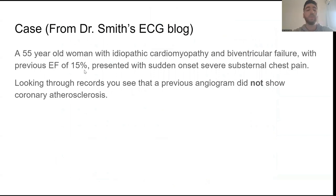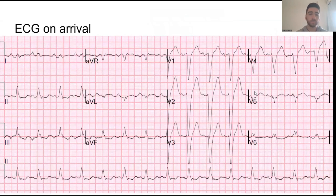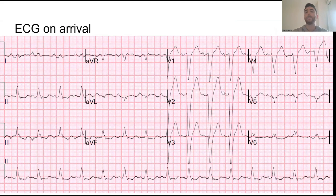Let's go through a case. We have a 55-year-old woman with idiopathic cardiomyopathy and biventricular failure with a previous ejection fraction of 15%. She presents with sudden onset severe substernal chest pain. Previous records show a coronary angiogram done within the past few months did not show significant coronary atherosclerosis. This is the EKG on arrival — pause and try to diagnose it.